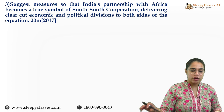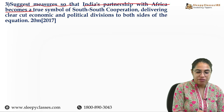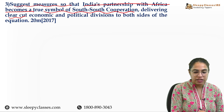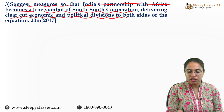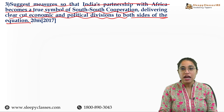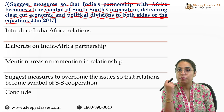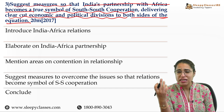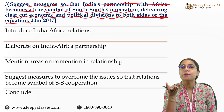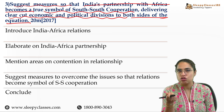The next question asks: suggest measures so that India's partnership with Africa becomes a true symbol of South-South cooperation delivering clear-cut economic and political dividends to both sides of the equation. This was a 20 marker. First, talk about India-Africa relations and give a little historical context, and see which main movers of the India-Africa relationship there are. Then importantly, elaborate on the partnership — what have we done in the past and what can we do.